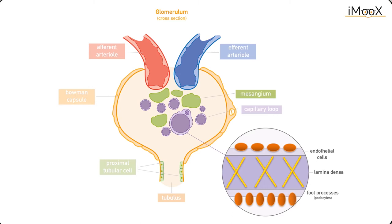Following the passage through the arterioles, large particles are not able to pass through this wall. However, small particles are able to get through the slits and they are filtered into primary urine.